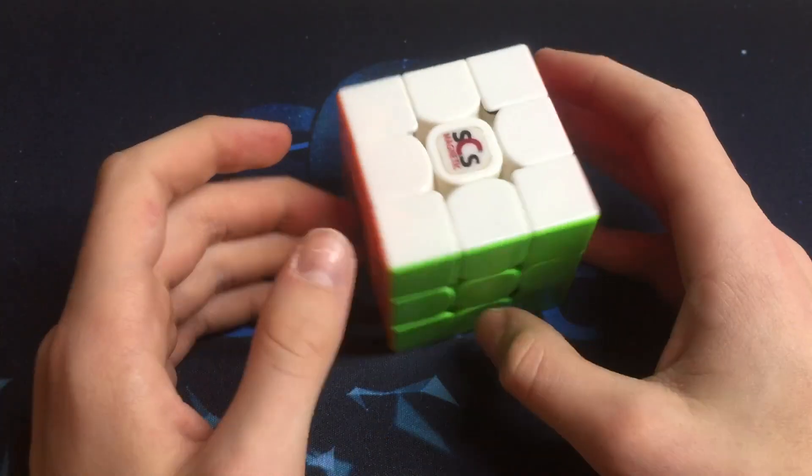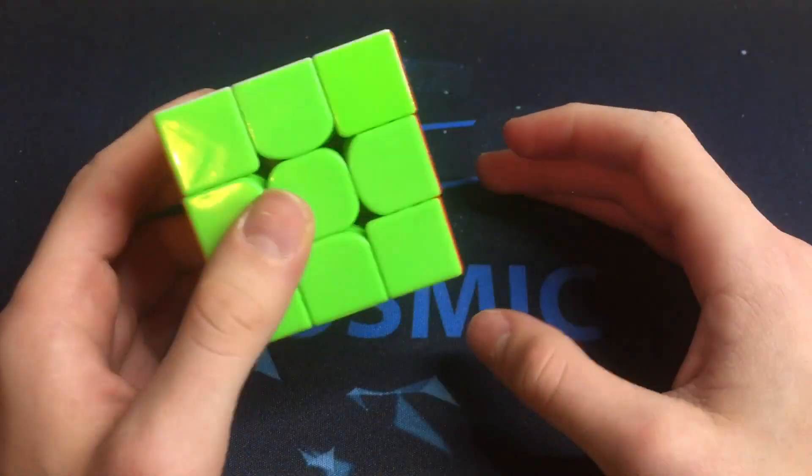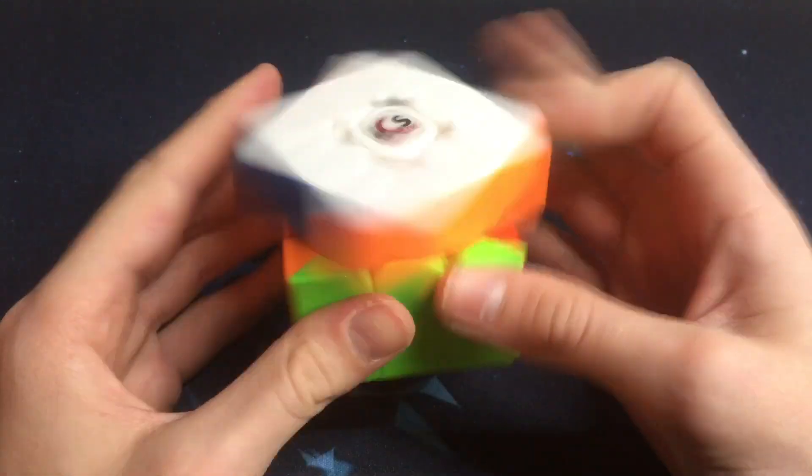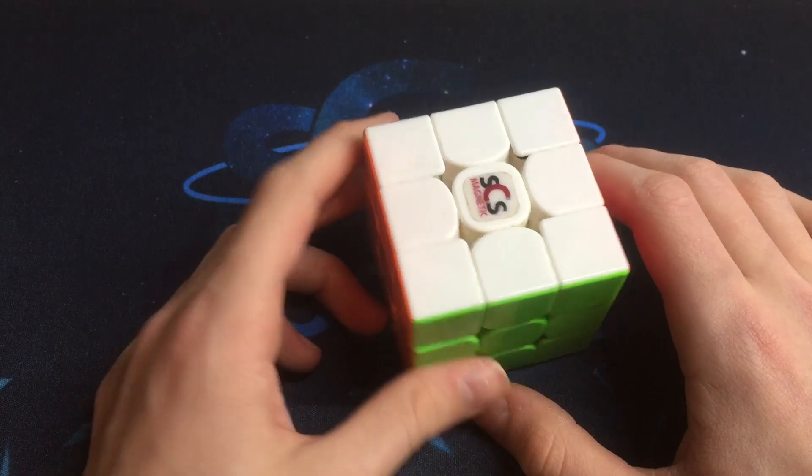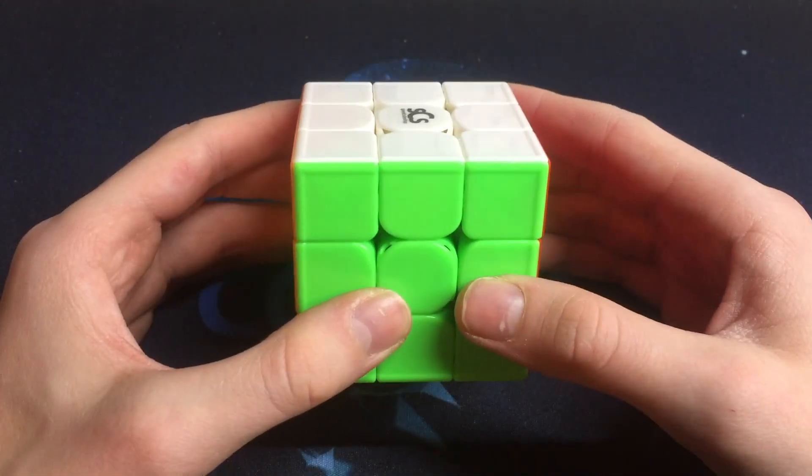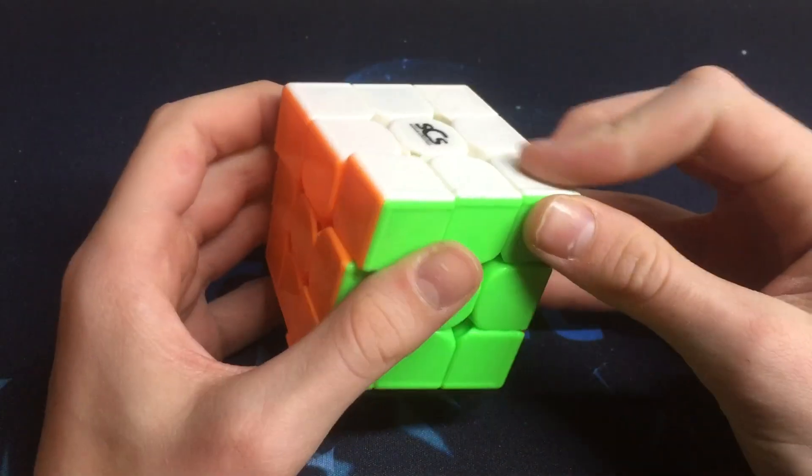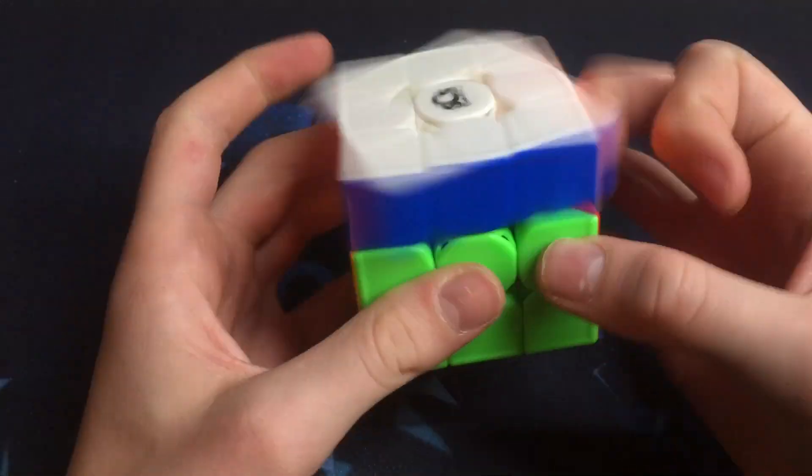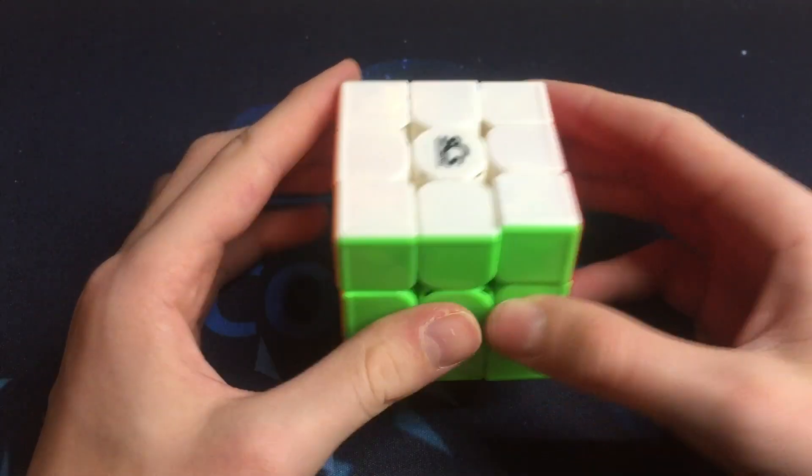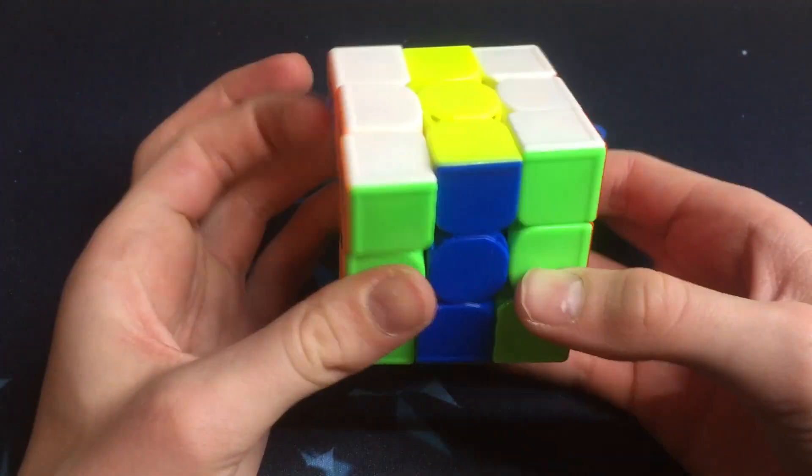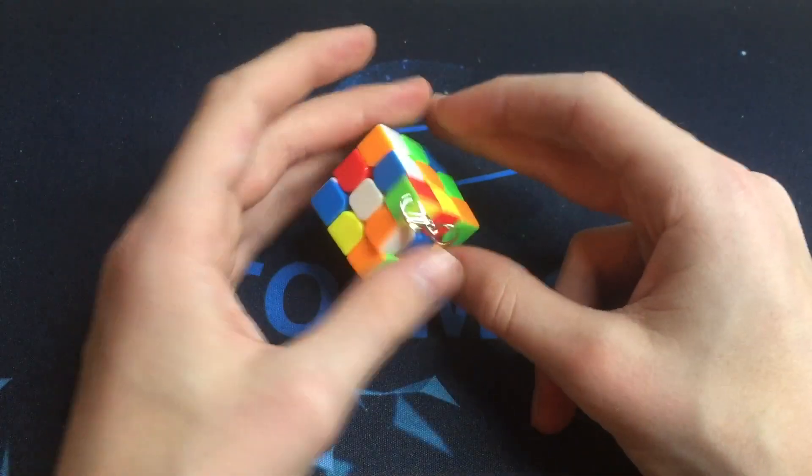This is a Valk 3. I really like this puzzle. It used to be my main but now I'm leaning towards other cubes, Gan cubes in particular. This is a GTS3. It's not magnetic but it's got these ridges on which I don't think help you in a way. The feeling of this puzzle was really nice.